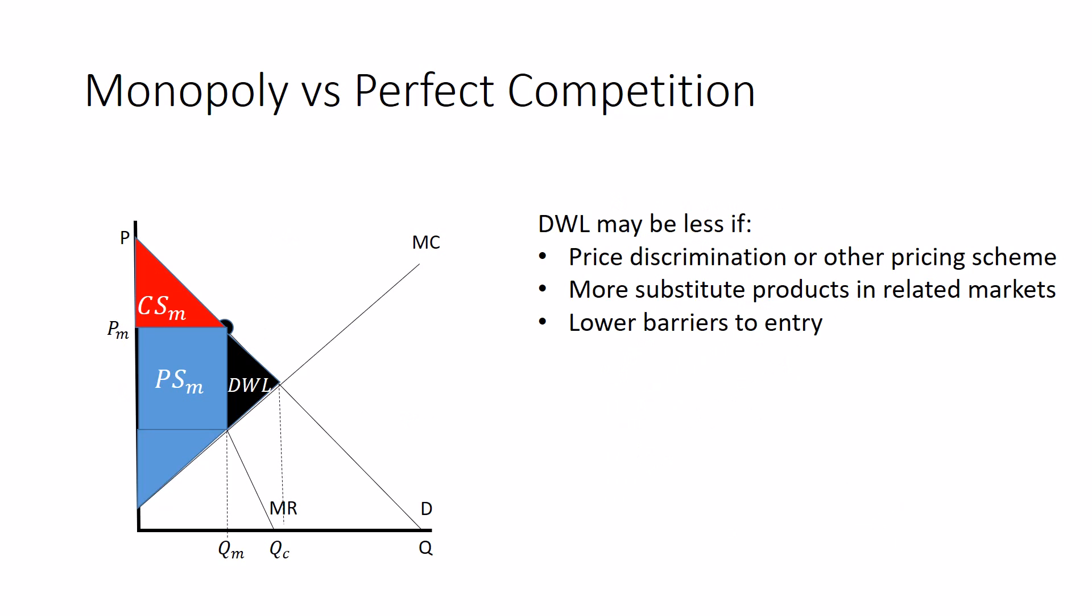Deadweight loss would be less if there were lower barriers to entry because there would be threat of firms entering the market and some competitive pressure. So those are some things where we could see a monopoly market becoming a little more efficient, or maybe even all the way efficient in some extreme cases.